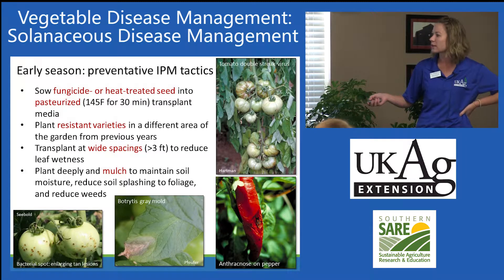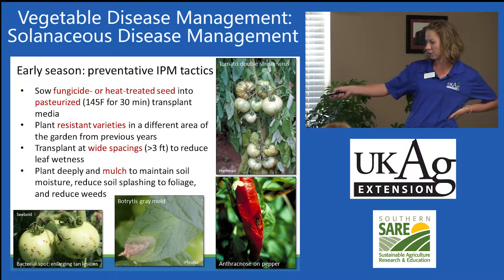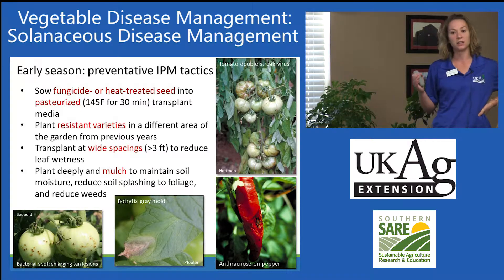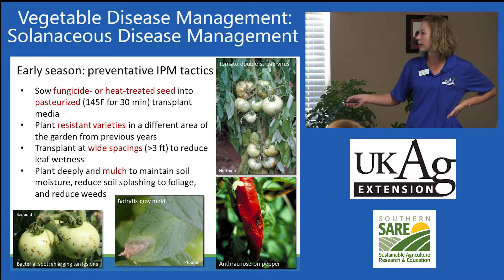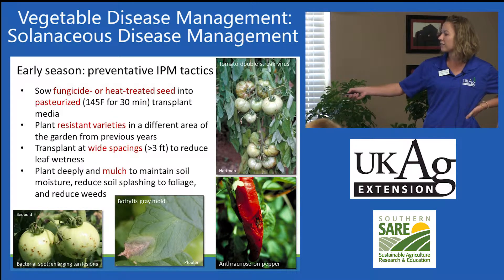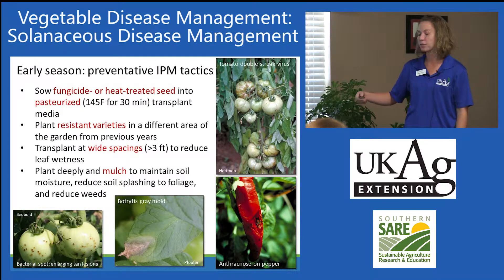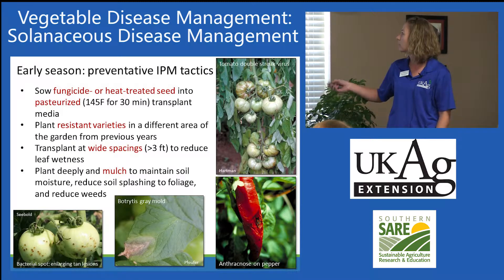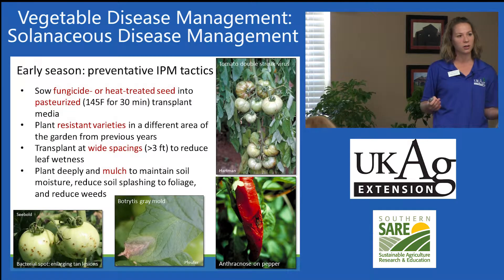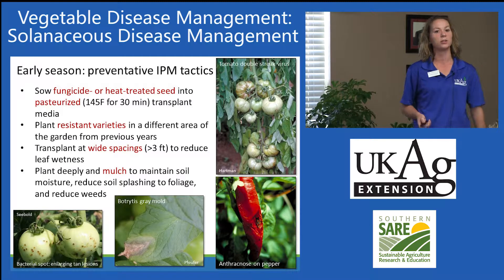Here are some common diseases of solanaceous crops. Down here on the left is bacterial spot of tomato — you can see some of these enlarging tan lesions on the fruit, and that also goes to foliage, appearing in younger foliage before older foliage. Botrytis gray mold is more common in greenhouses or high tunnels; I think of that one as the slice-of-pie type lesion on a leaf. Anthracnose on pepper is a pretty common fungal disease. Up here is a less common one — tomato double streak virus. In general, viral diseases are fairly uncommon in the home garden; we tend to focus more on fungal, oomycete, and bacterial diseases.